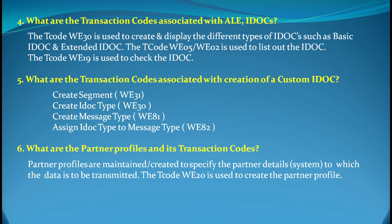The fifth question is: what are the transaction codes associated with creation of custom IDocs? If you have posted this on your resume, this is a very basic question you cannot fail to answer. WE31 is to create a segment, WE30 is to create an IDoc type, WE81 is to create a message type, and WE82 is to assign an IDoc type to a message type. Please memorize these if you put this on your resume.